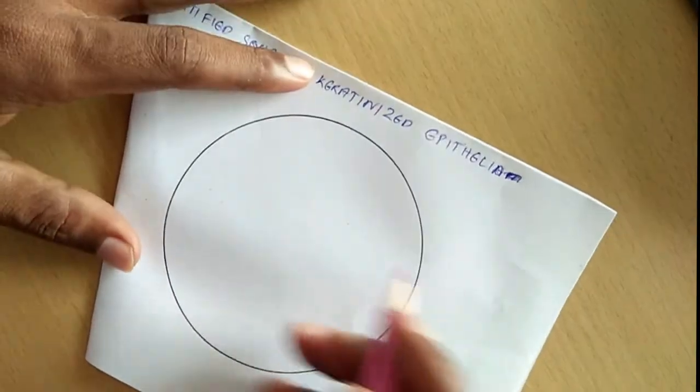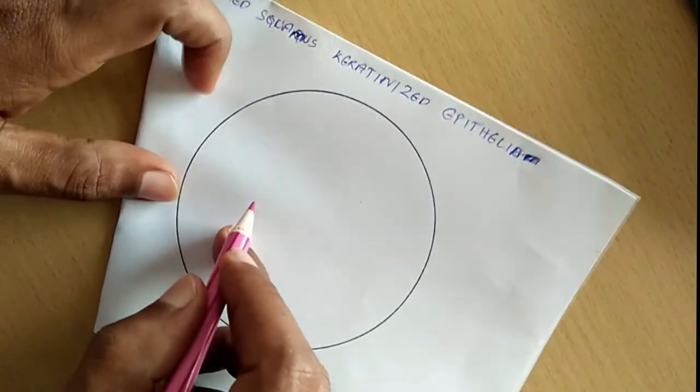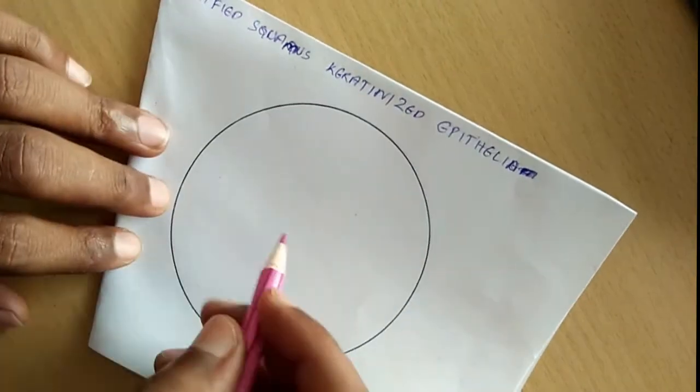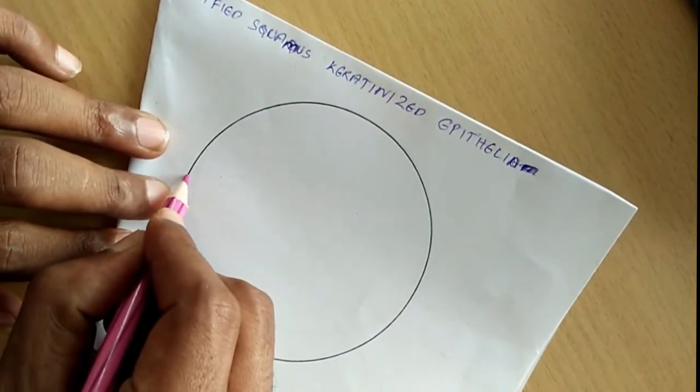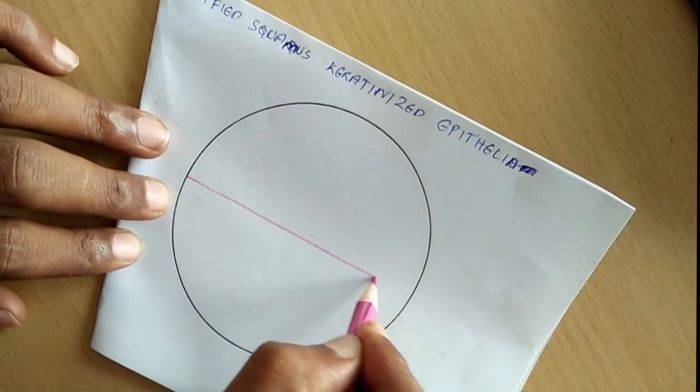We are going to draw a stratified squamous keratinized epithelium, so the basement membrane is here.